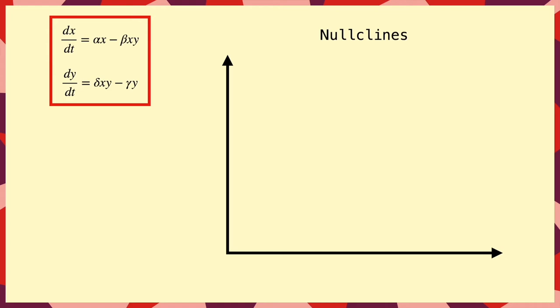And whenever we do that, the first step is to find what are called nullclines, which are lines on which dx by dt or dy by dt is 0.